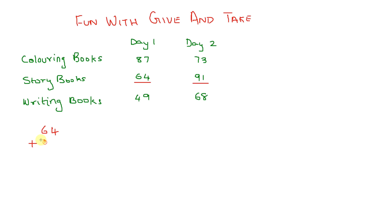We need to add these two up to see how many story books he sold. So that's 64 plus 91. Let's start from the ones column. We have 4 plus 1 equals 5, and we have 6 plus 9 equals 15. So now we know he sold 155 story books in the two days.